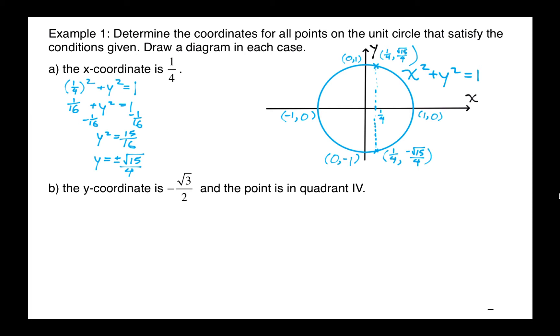Here's another possibility. If we've got a y coordinate that's negative root 3 over 2, and the point is in quadrant 4, this is what it looks like. Here's that y coordinate of negative root 3 over 2, and it's in quadrant 4, so we're only looking at one solution.